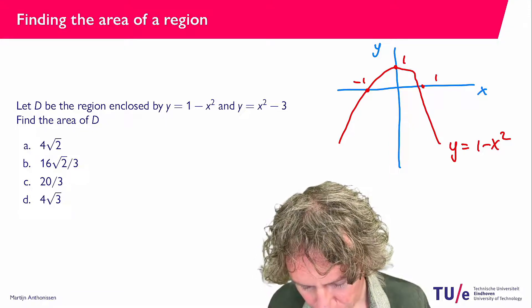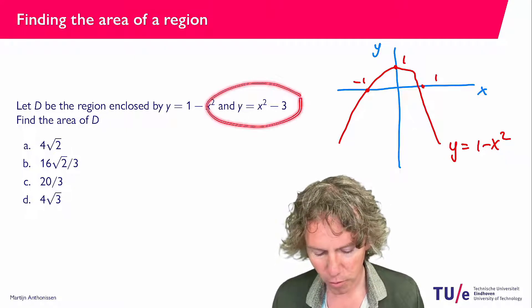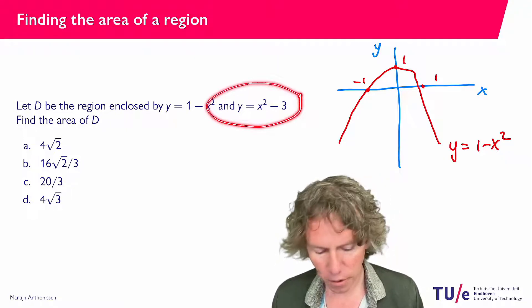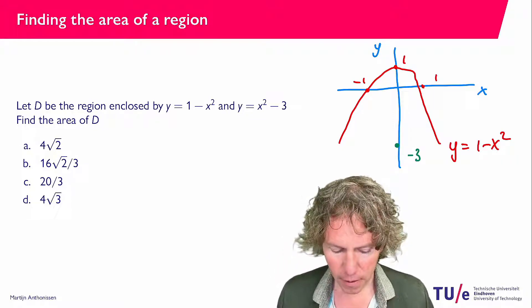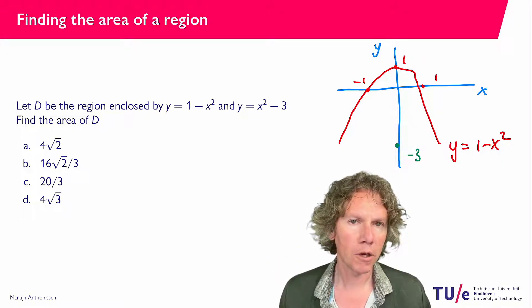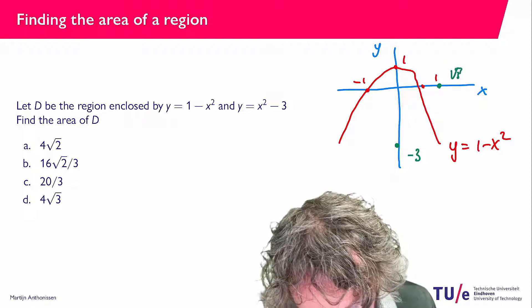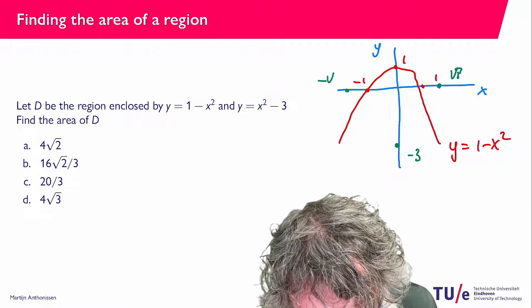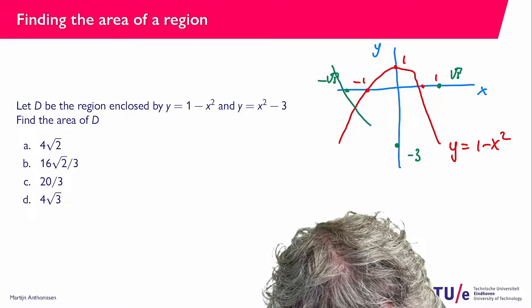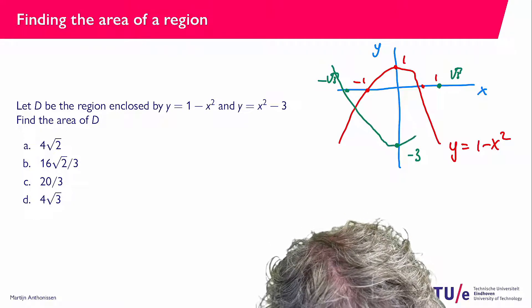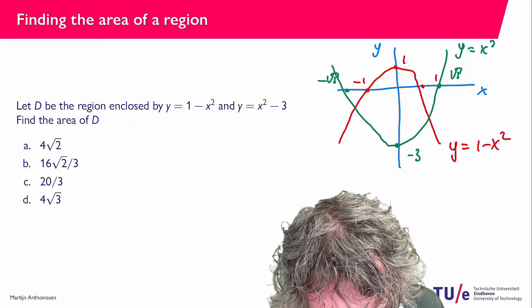Now for the other parabola, y equals x squared minus 3. If we plug in x equals 0, we get minus 3. For x equals the square root of 3, which is approximately 1.7, and minus square root of 3 on the other side, those are also on this parabola. So this parabola goes through all these points — this is a sketch of y equals x squared minus 3.